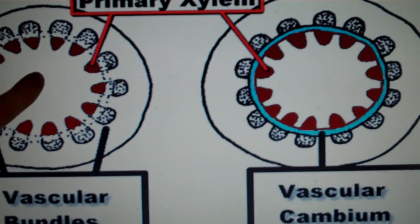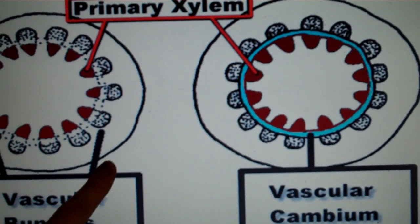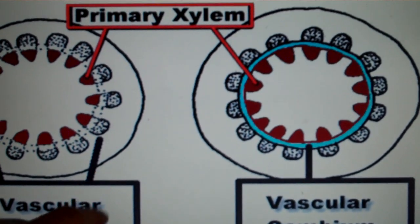The ground tissue consists of pith, and on the outside we have cortex. This is the dermal tissue or the epidermis on the outside.